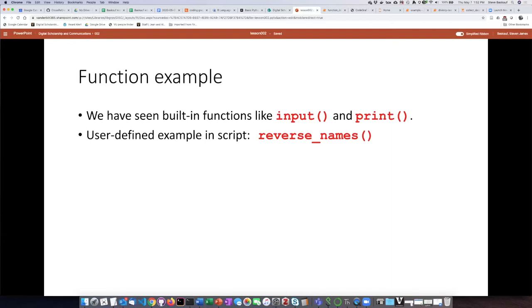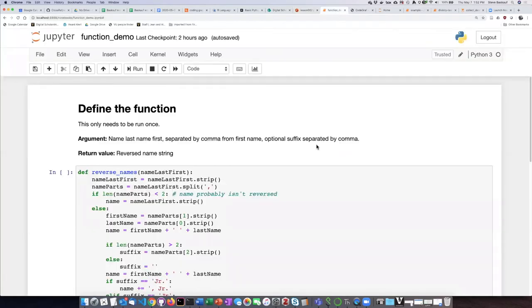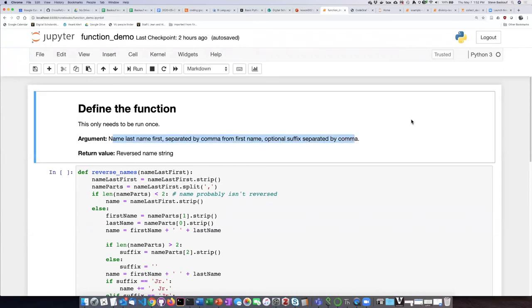We're going to look at an example of a function that I've defined myself called reverse_names. So let's just go to this Jupyter notebook. In my literate coding here, the first thing I've done is explained about what the function does. So this is the definition of function. As you can see, there's a lot of code here, but as I said, we don't really even have to understand what the code does. We don't have to understand how the code works. All we have to know is what it does. So I've set up here that what you need to do is to pass in the last name first, separated by a comma from the first name. And then if there's a suffix like junior or the third, you can include that separated by a comma. And then what you expect to get out of the function is the name string reversed into the normal pattern that we are used to seeing here.